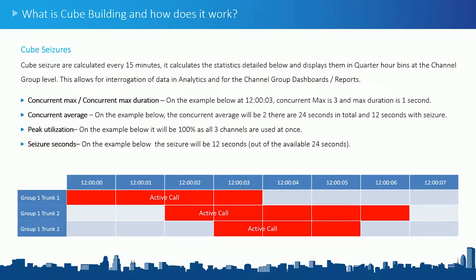At 12 o'clock and three seconds you had three concurrent calls active for one second — so your concurrent max was three calls, at maximum duration for one second. The concurrent average is calculated by adding up the grid: there were 12 squares blank (no calls) and 12 squares with an active call, giving an average of two concurrent calls — 24 seconds total, 12 seconds with seizure. The peak utilization: with three channels available and three active calls, we were using 100% of our available channels. The seizure seconds count every active second — in this example, 12 seizure seconds.